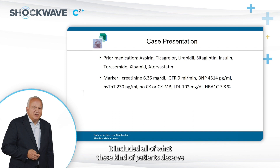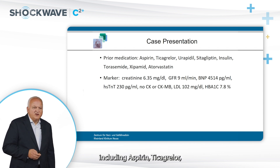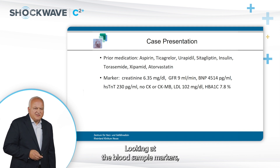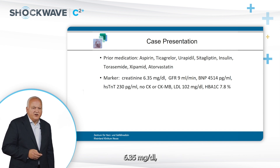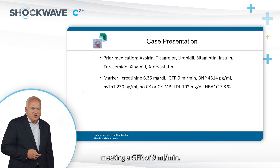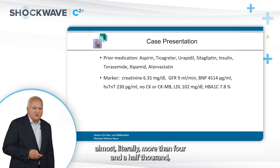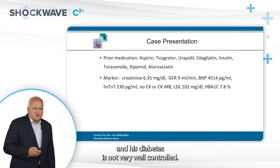Looking at his medication, it included everything these patients deserve, including aspirin, ticagrelor, urapidil, sitagliptin, insulin, torasemide, xipamide, and atorvastatin. Blood sample markers showed creatinine substantially high at 6.35 mg/dL, with a GFR of 9 ml/minute. BNP is significantly high at almost 4,500, and his diabetes is not very well controlled.